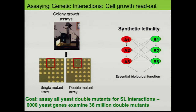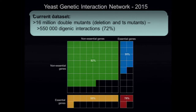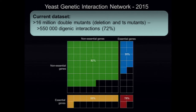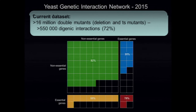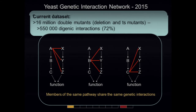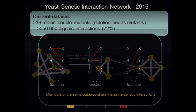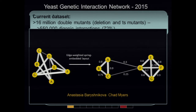The goal is to assay all yeast double mutants — that's 36 million double mutant combinations. We consider this project essentially done, at least in standard growth conditions given technical limitations. We've assayed 16 million double mutants, looking at half a million or so double mutant interactions, exploring most of the non-essential gene space and a lot of the essential gene space in yeast. To visualize these data, we take advantage of the principle that genes functioning together in the same biological process should share patterns of genetic interactions, so we look at genetic interaction profiles as a phenotype rather than individual interactions.